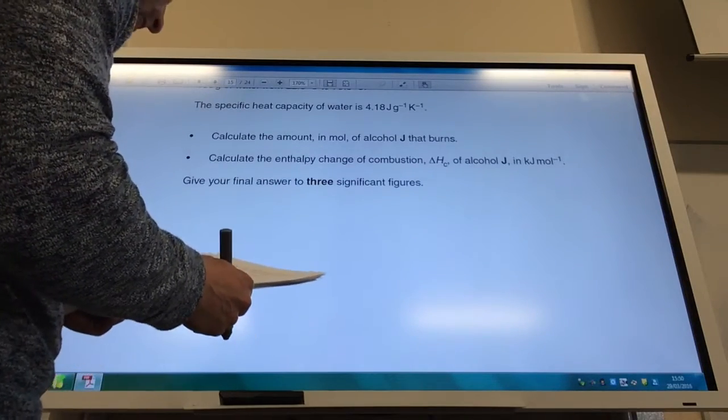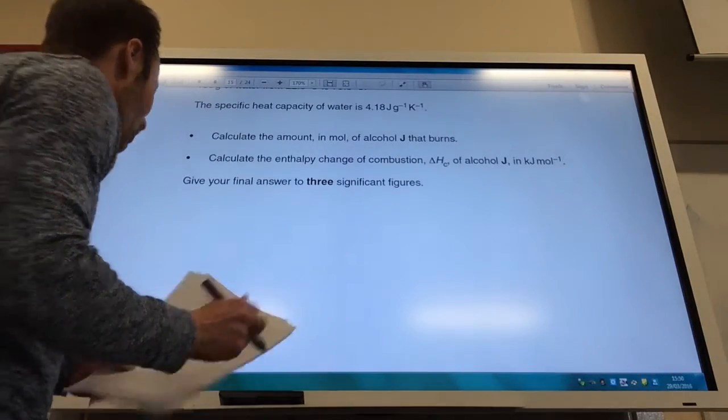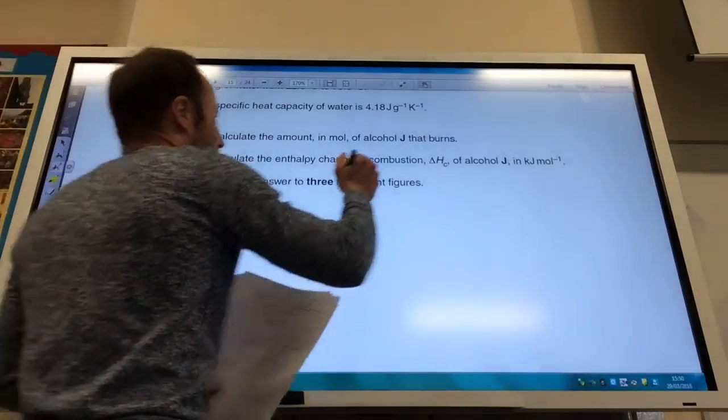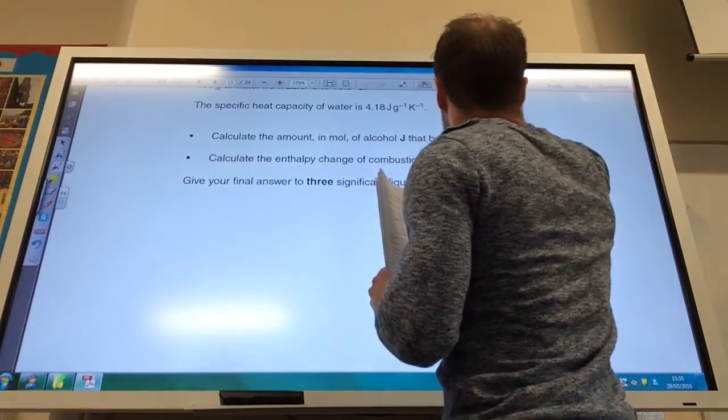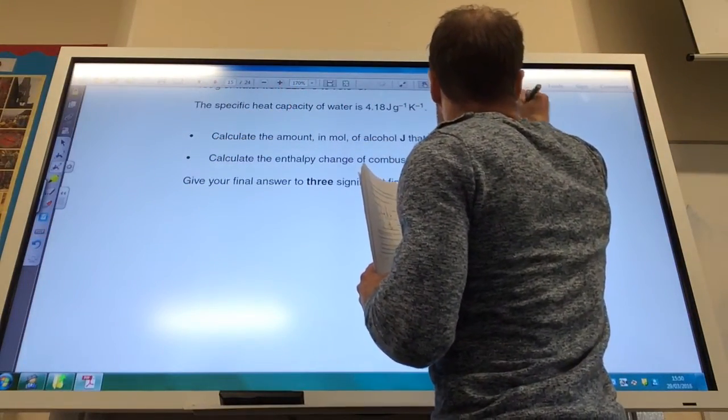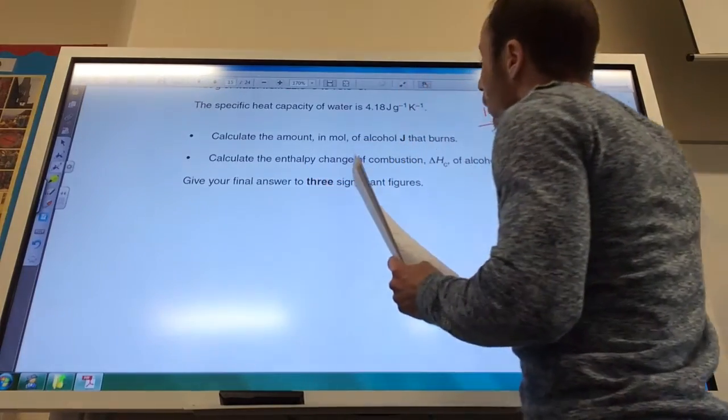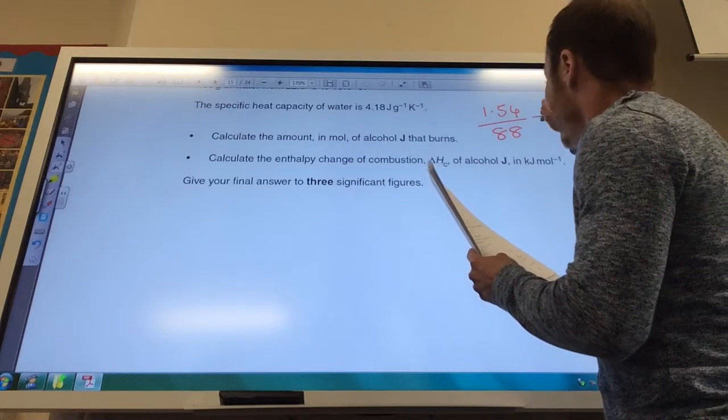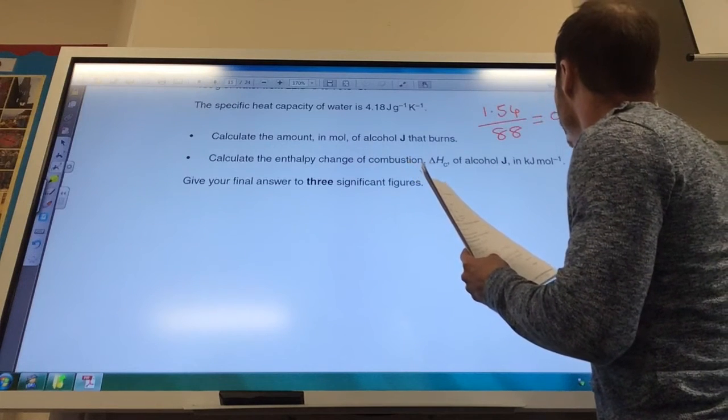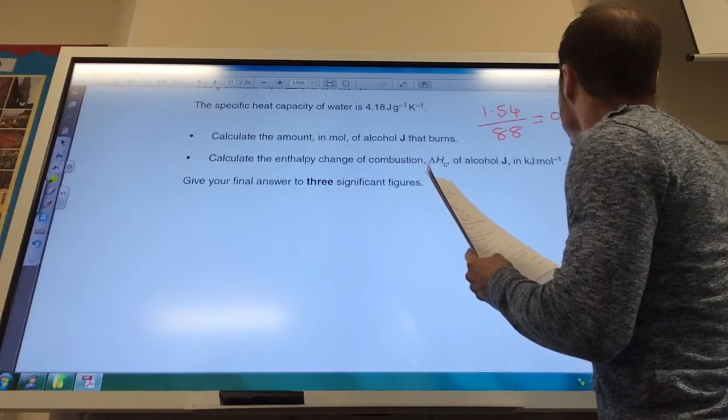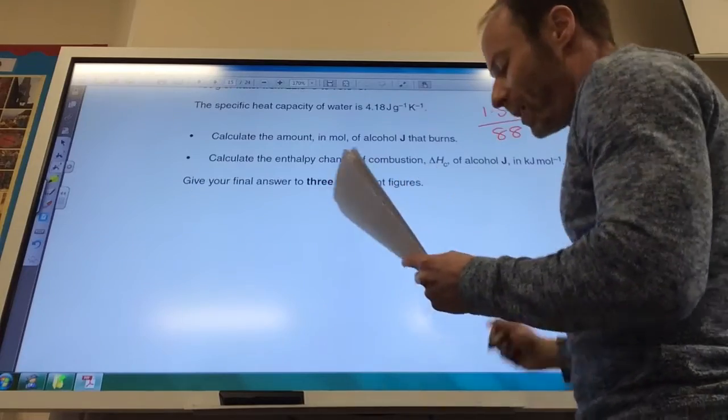And then calculate the enthalpy change of combustion. So, first of all, moles of alcohol, let's do that. I've got 1.54 grams of alcohol. If you add up the molar mass, you come to 88, and that comes to 0.0175 moles.